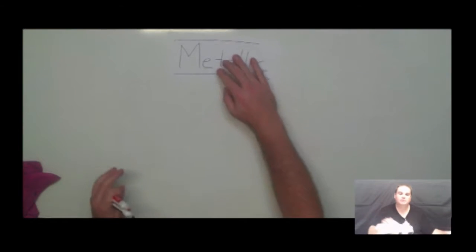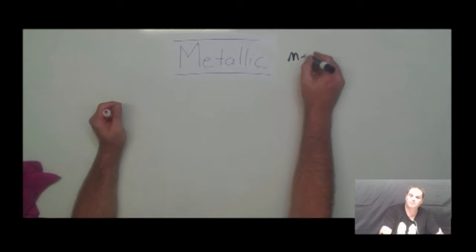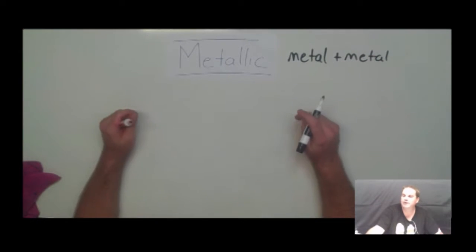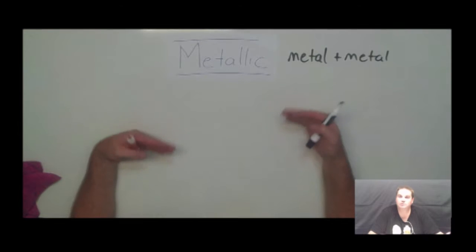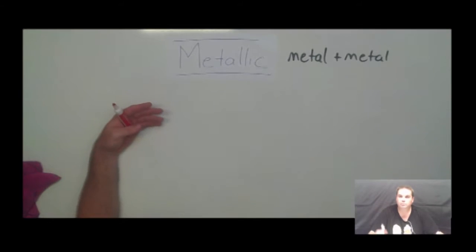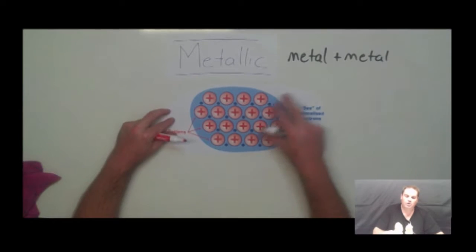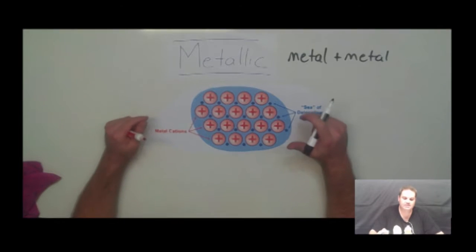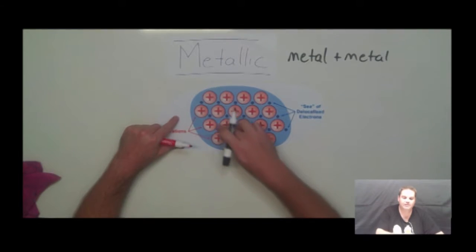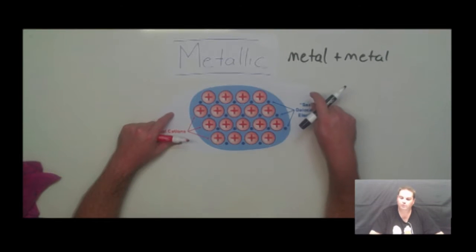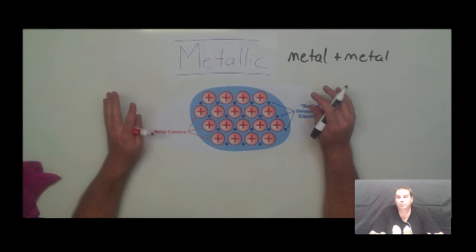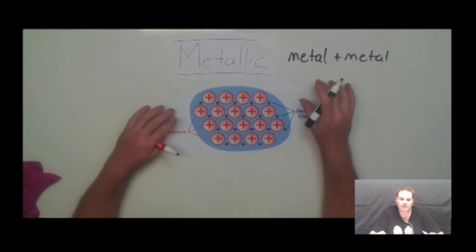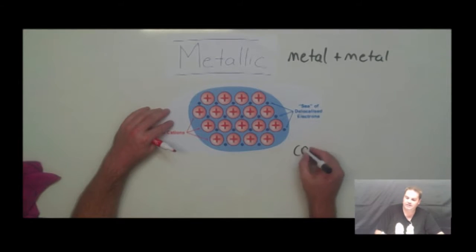Metallic bonds are those that occur between a metal and a metal atom — two metal atoms combining together. What metals want to do is donate electrons, but they can't really donate electrons to each other. So what they do instead is form a structure where each positive metal cation — an atom that's lost an electron — allows that electron to go between the metal atoms to form what we call a sea of delocalised electrons, or sometimes a free sea of valence electrons. This is really important because it allows metals to be really good conductors of electricity.